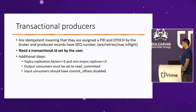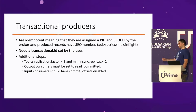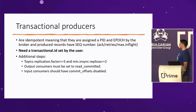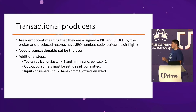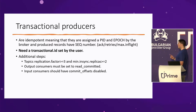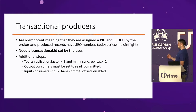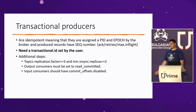Next: transactional producers. They allow you to write atomically to a set of different topics and partitions at the same time. Notably, you need to set a transactional ID as a user. There is a one-to-one mapping between this transactional ID and the PID — the broker keeps a map between them. You can think of transactional producers as a superset of idempotent producers, though the logic resides in the same class.